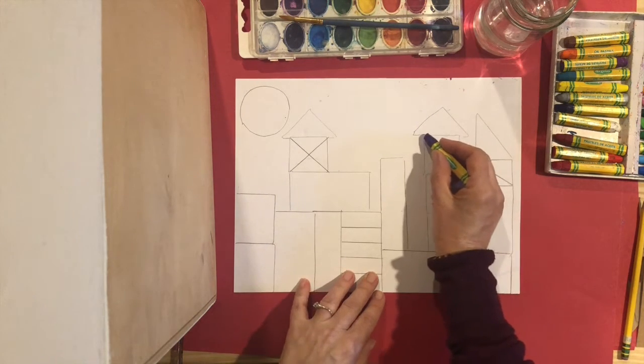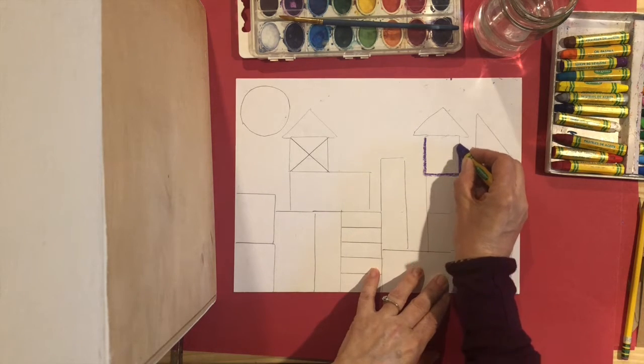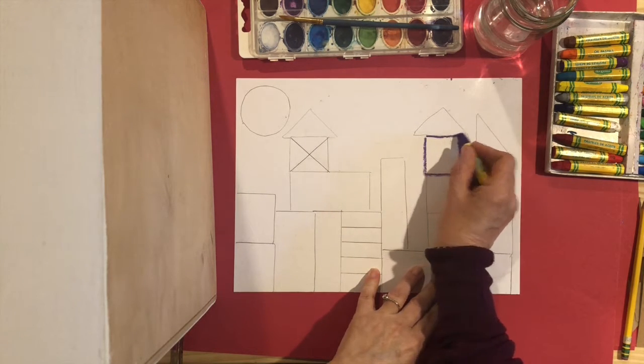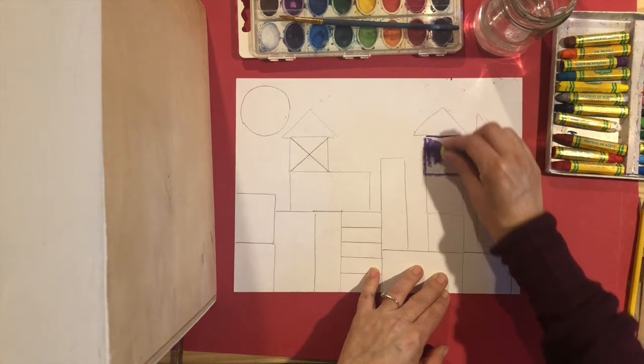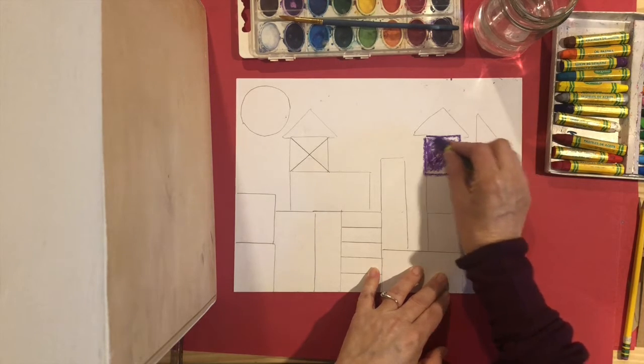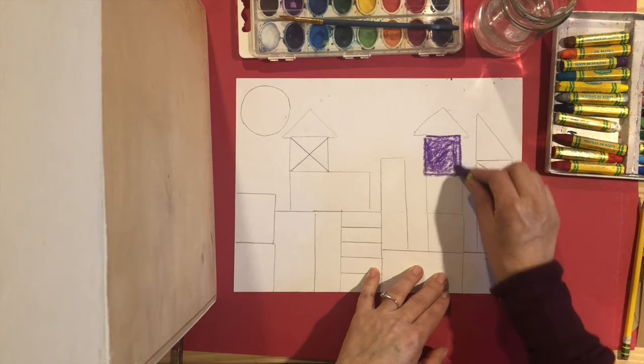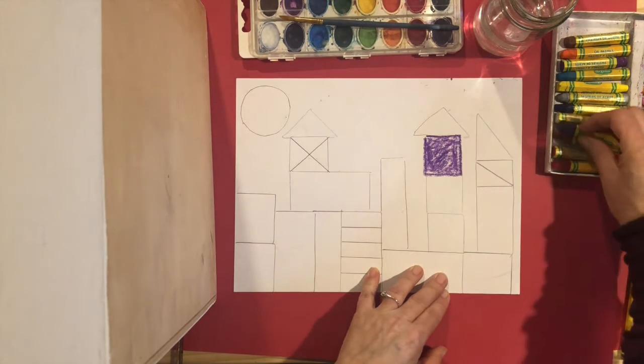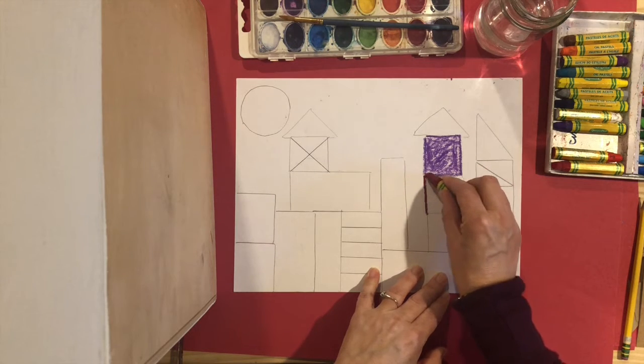The other thing you're going to do, you're going to outline your shape first in the color you've chosen. Outline and then color. For this project, you don't need to color too hard because we are going to be painting right on top. So I'm actually pressing lightly with my crepa this time, or if you're using crayon. So outline my shape first with the color I've chosen.